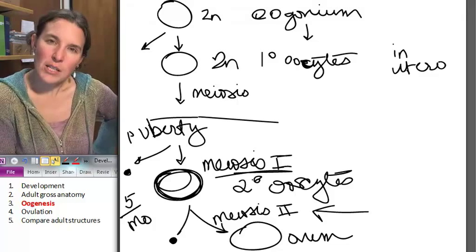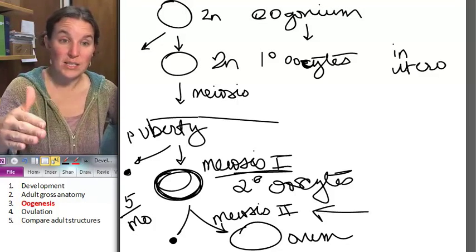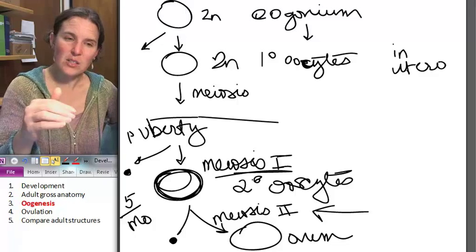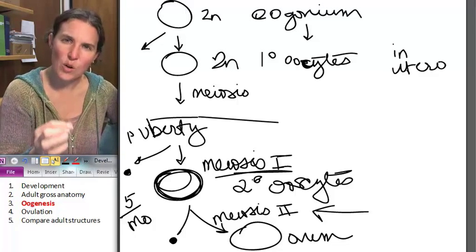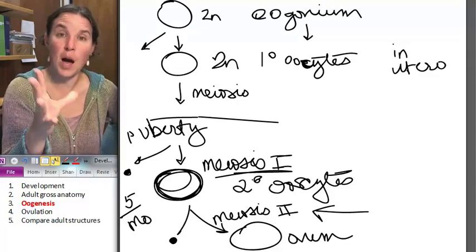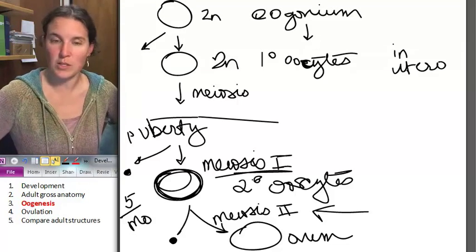Let's talk about ovulation because we now, you know the process to make the egg. Let's look at what's happening in the ovary itself in order to pop the egg out into the fallopian tubes in the first place.